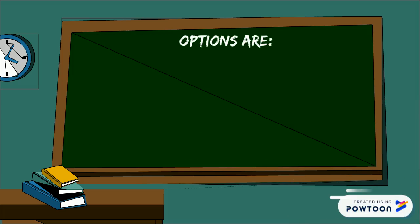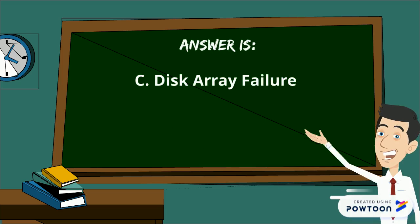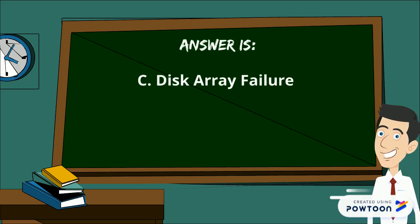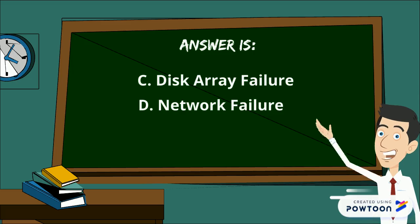Choose two options. Option A: vCenter Server Failure, B: vXLAN Failure, C: Disk Array Failure, D: Network Failure, E: ESXi Failure. The answer is C: Disk Array Failure and Option D: Network Failure. Let's understand the reason why.